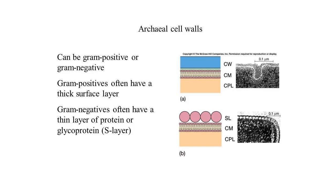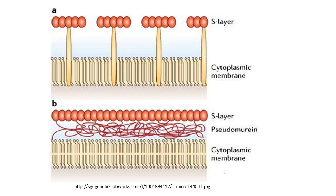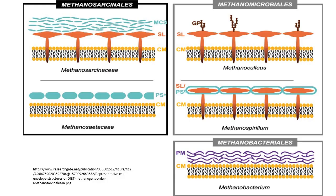Gram-negative archaeobacteria have a layer of protein or glycoprotein outside their plasma membrane. The layer may be as thick as 20 to 40 nanometres. Sometimes there are two layers or a sheath surrounding an electron-dense layer. The chemical content of these walls varies considerably. Many methanogens and several extreme thermophiles have glycoproteins in their cell wall, while other methanogens and extreme thermophiles can have protein walls.